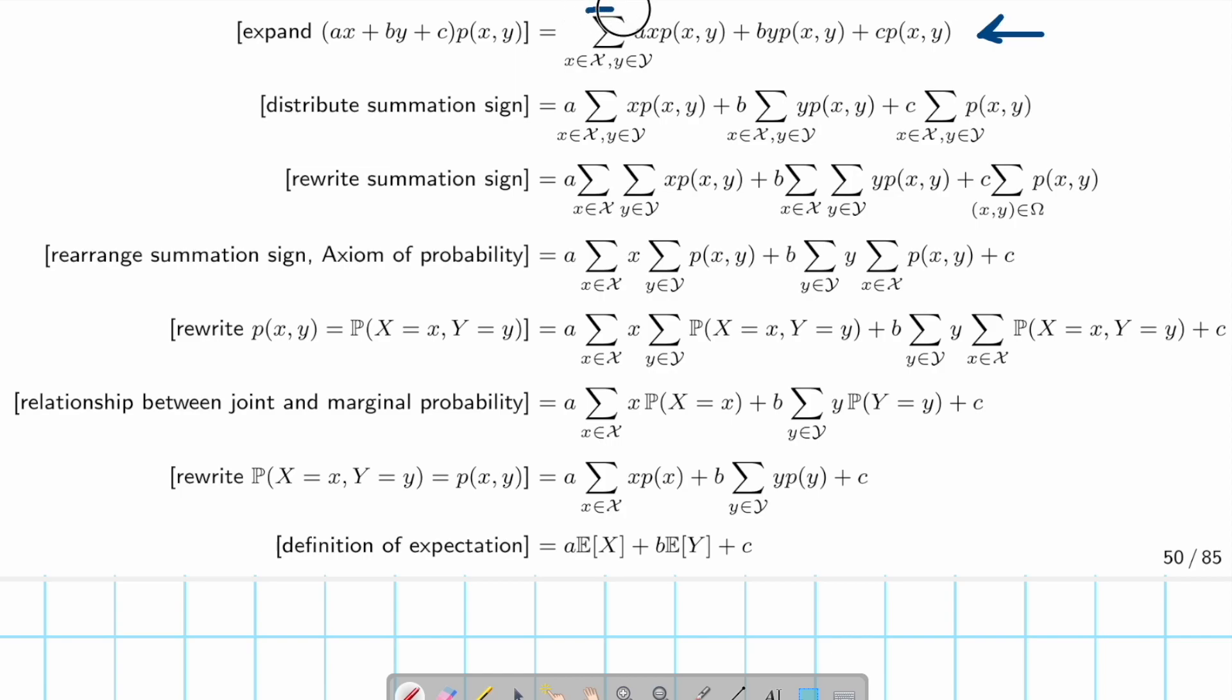The next thing is we distribute this summation sign into each of the terms. So distributing the summation sign gives us this, and we take the a out because we can take a out. And distributing this gives us the second term, and we move the b outside the summation side.